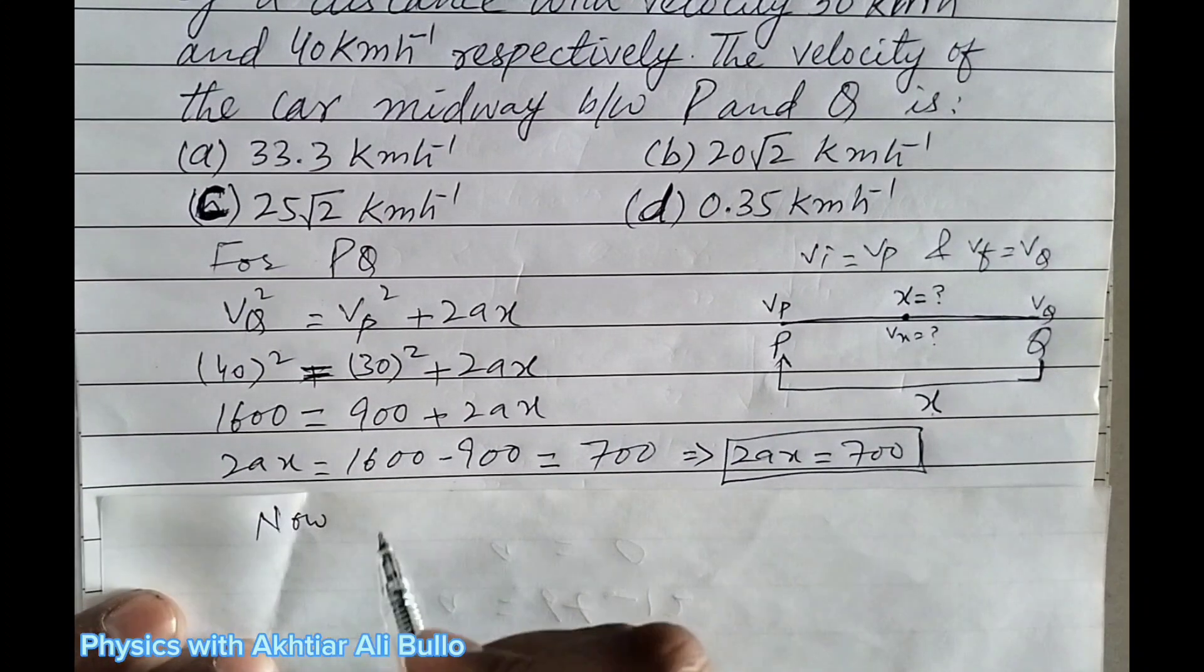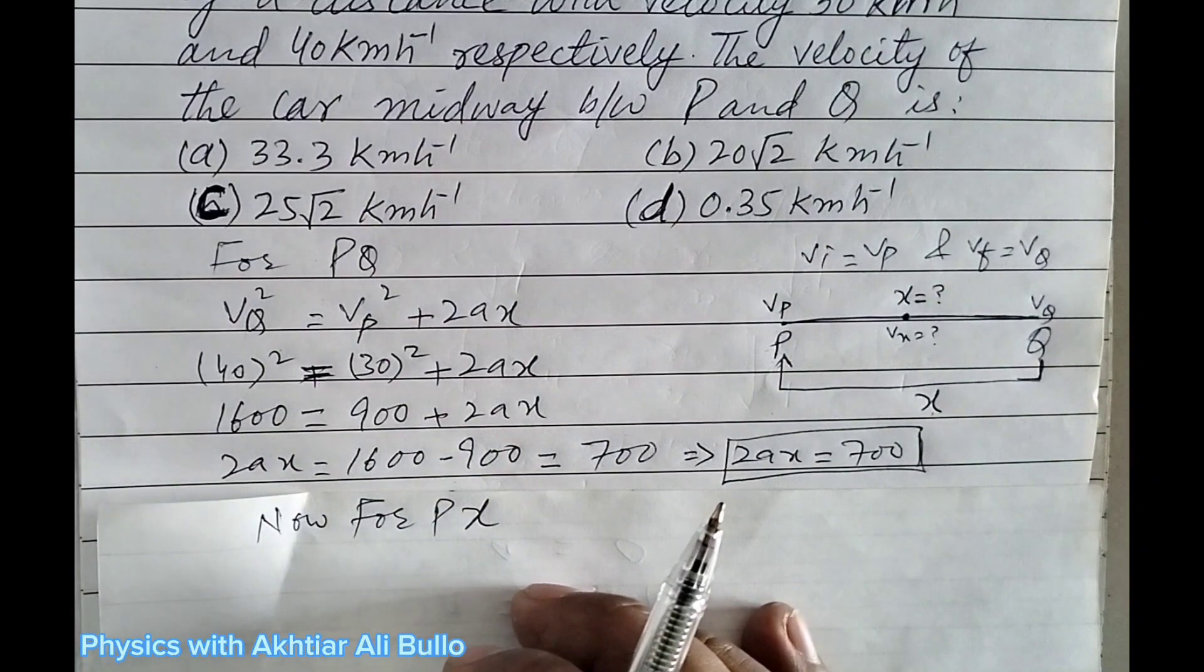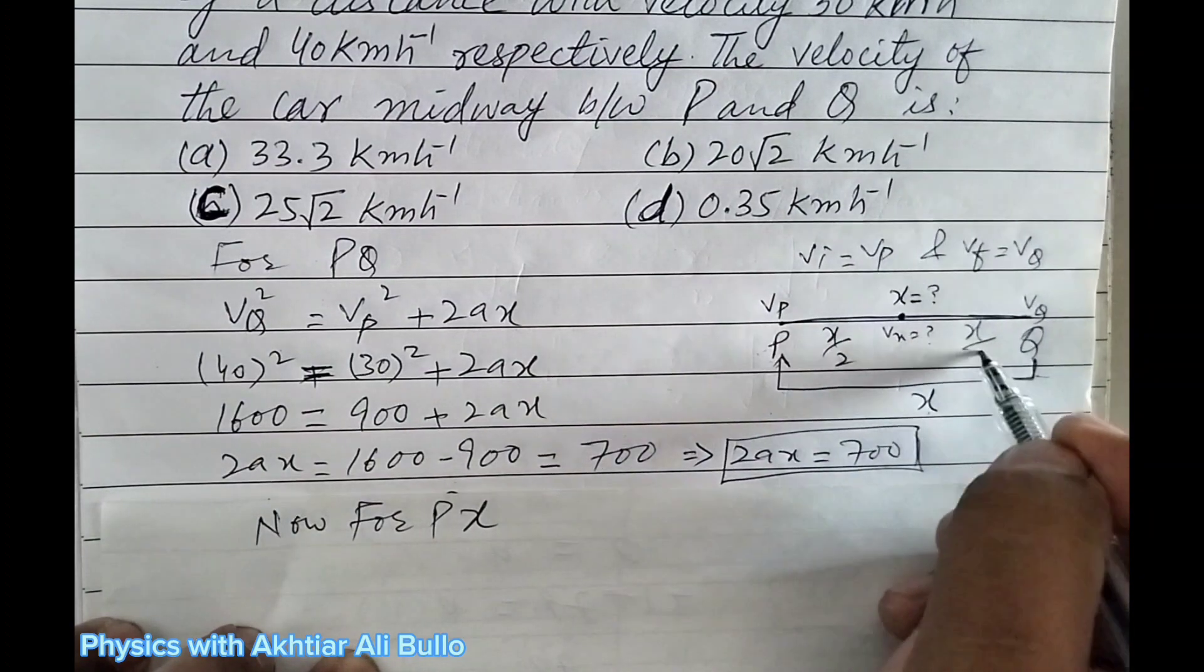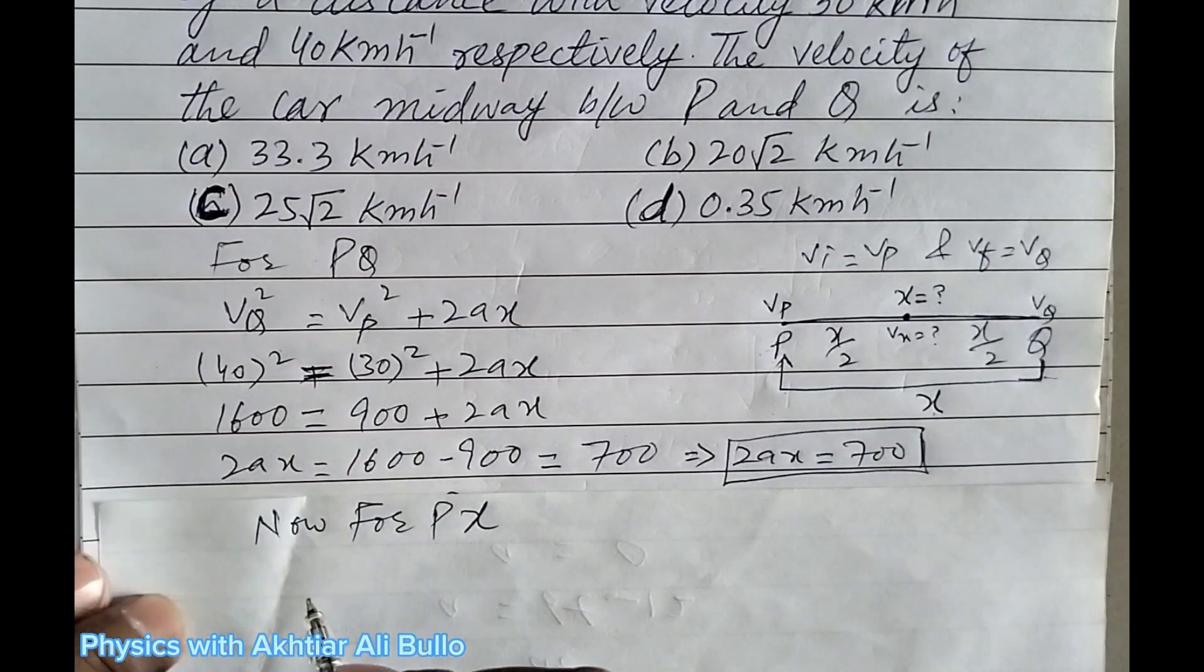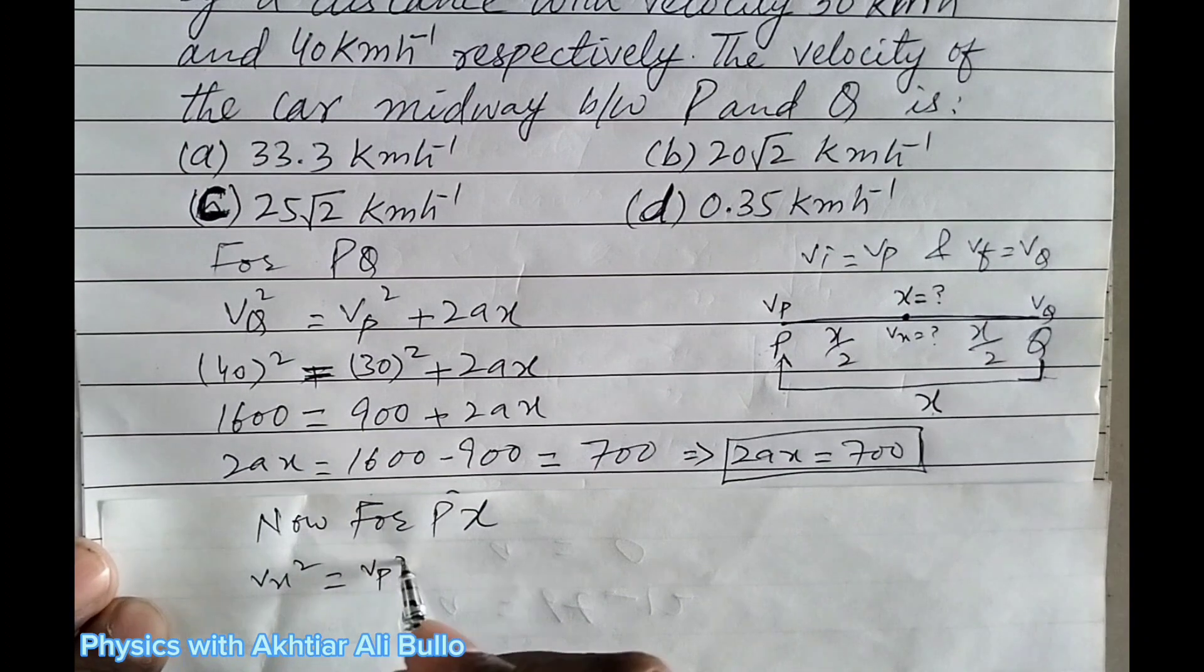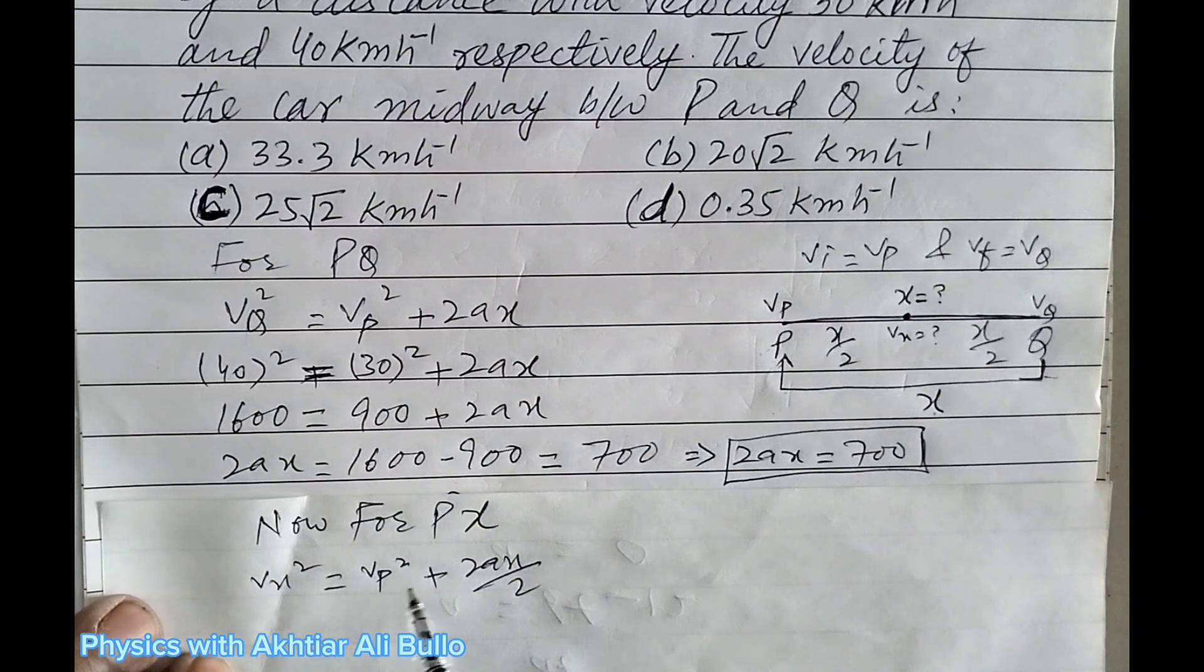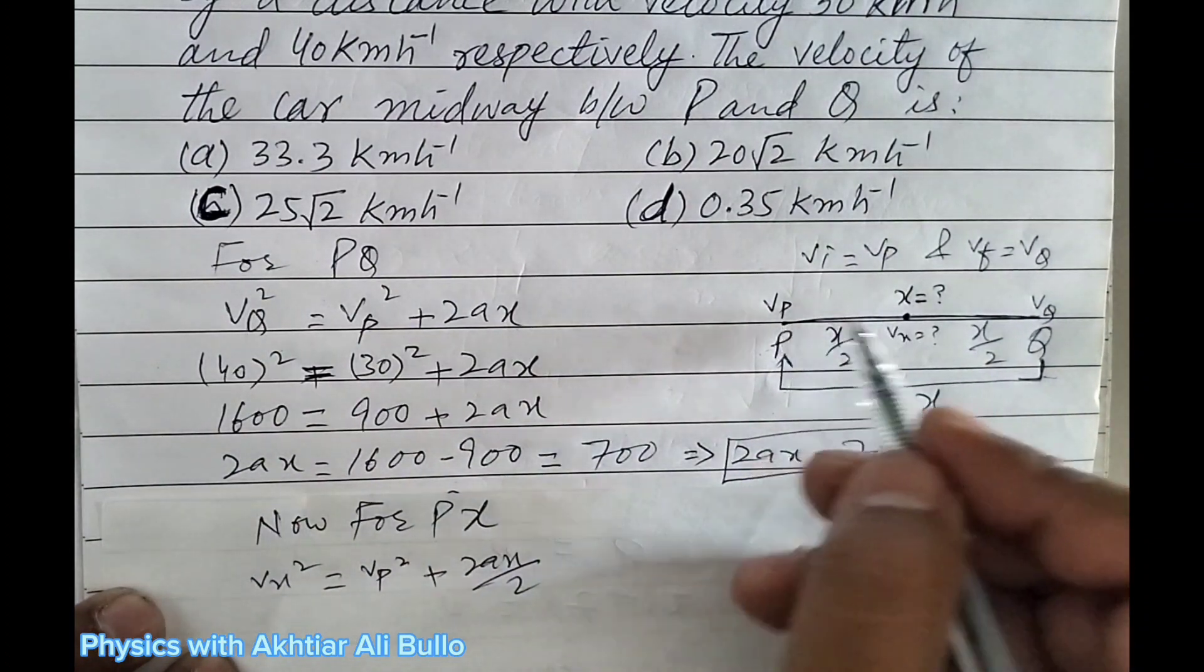Now for P and X, the distance from P to X is X/2 and X to Q is X/2. So Vx² = Vp² + 2a(X/2). Vp is Vi and Vx is Vf, means according to this it is final velocity.